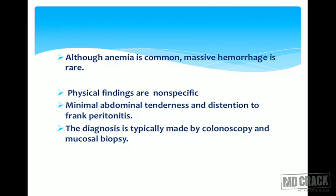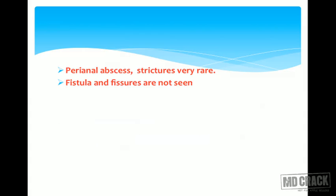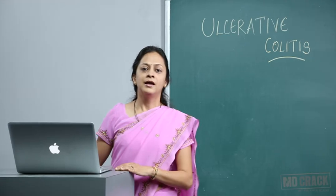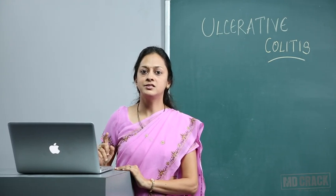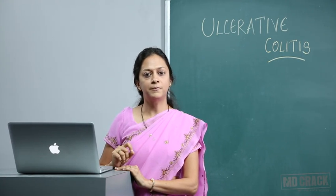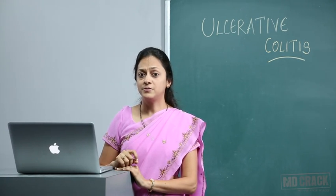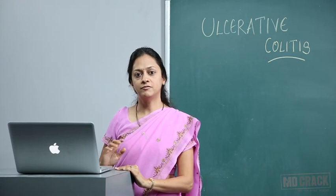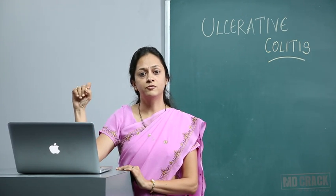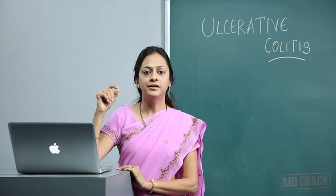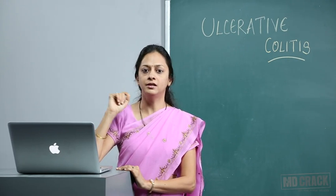Physical findings are nonspecific, ranging from minimal abdominal tenderness and distension to frank peritonitis. Diagnosis is typically made by colonoscopy and biopsy. Perianal abscesses and strictures are very rare, and fistula and fissures are not seen — perianal disease is seen in Crohn's, not ulcerative colitis. Strictures develop when the full thickness of the intestine is involved; in ulcerative colitis this is very rare, and if stricture is present you must rule out malignancy.